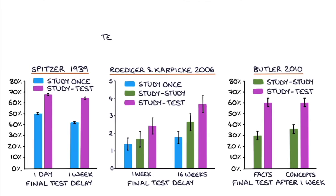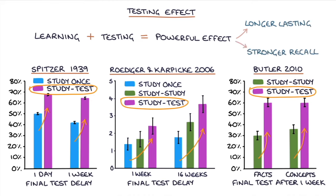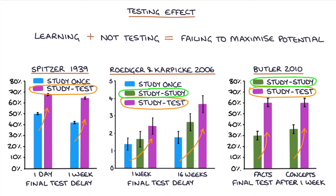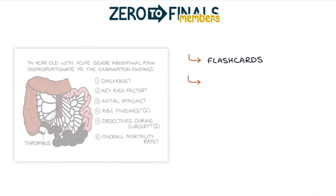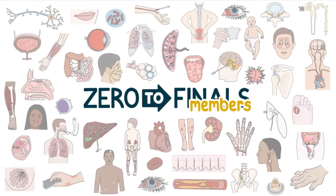Research has consistently shown that testing yourself after learning a topic has a powerful effect on how long you retain that information — this is known as the testing effect. Studying and then testing yourself results in longer lasting and stronger recall, even when compared with additional study sessions. The Zero to Finals member site contains flashcards, short answer questions, multiple choice questions, and extended matching questions purpose-built to supplement the Zero to Finals content, helping you build your knowledge and take advantage of the testing effect.